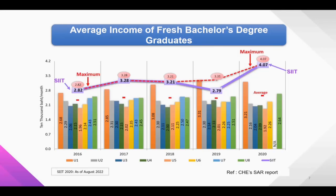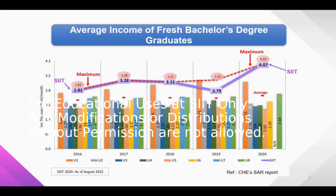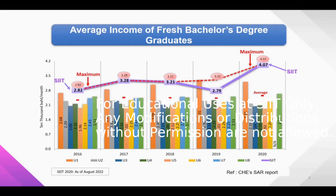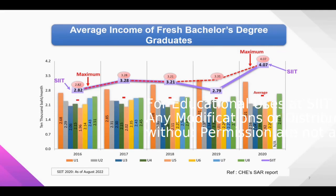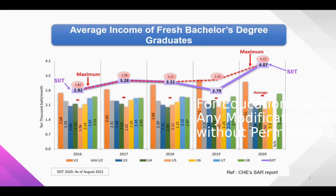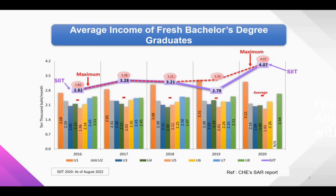This slide shows a comparison of average incomes of fresh bachelor degree graduates from different universities for many years up to academic year 2020. The purple color represents SIIT, and the red dashed line represents the maximum. SIIT graduates perform very well — we achieve the maximum average income for almost every year, except 2019. For 2020, we are again at the maximum. The comparison includes very famous universities in Thailand, and the data was obtained from the Commission of Higher Education, so it is reliable.